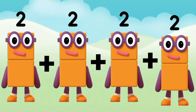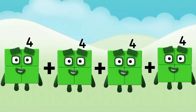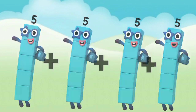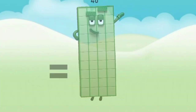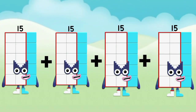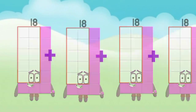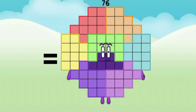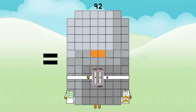2 plus 2 plus 2 plus 2 equals 8. 3 plus 3 plus 3 plus 3 equals 12. 4 plus 4 plus 4 plus 4 equals 16. 5 plus 5 plus 5 plus 5 equals 20. 10 plus 10 plus 10 plus 10 equals 40. 15 plus 15 plus 15 plus 15 equals 60. 18 plus 18 plus 18 plus 18 equals 72.